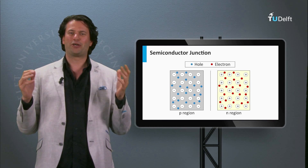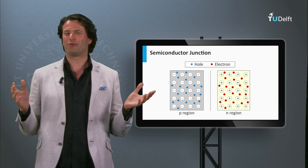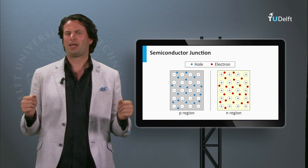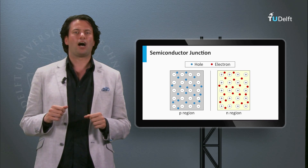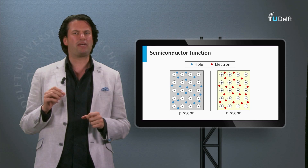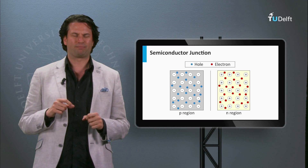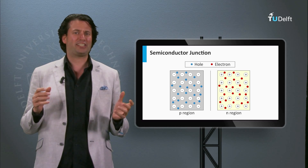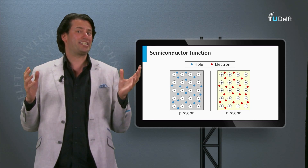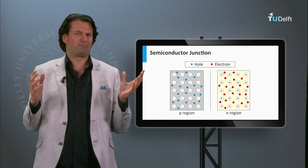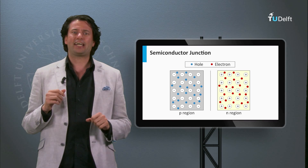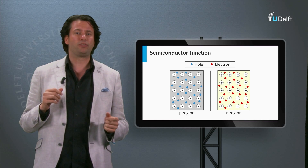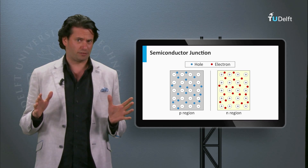Finally, we are going to build a solar cell. Most solar cells are based on a p-n junction. The question is, what is a p-n junction? Again, we take as an example the case for silicon.